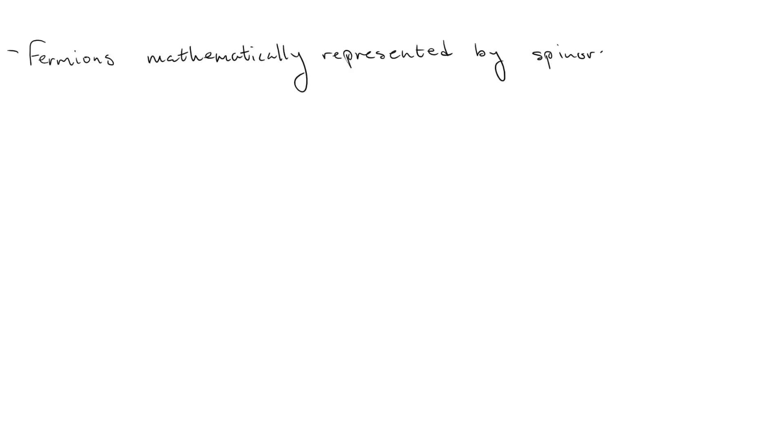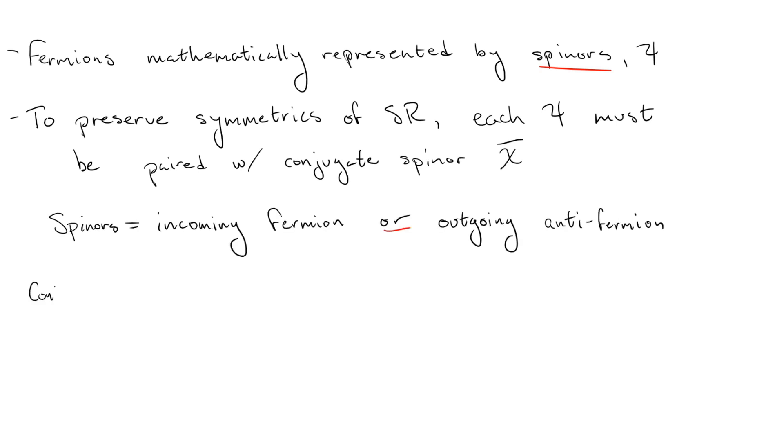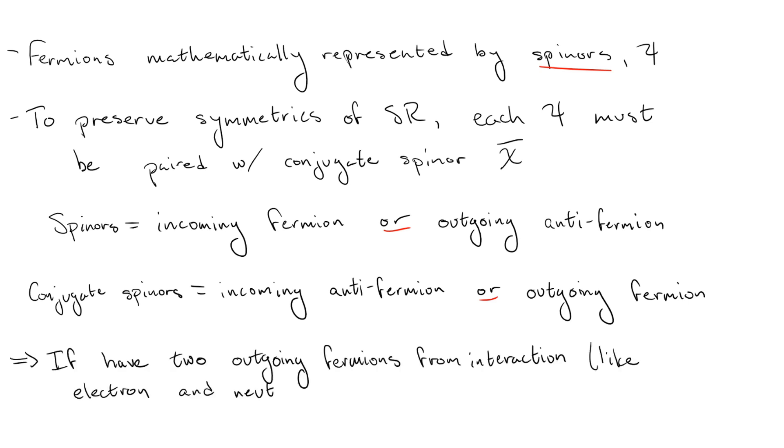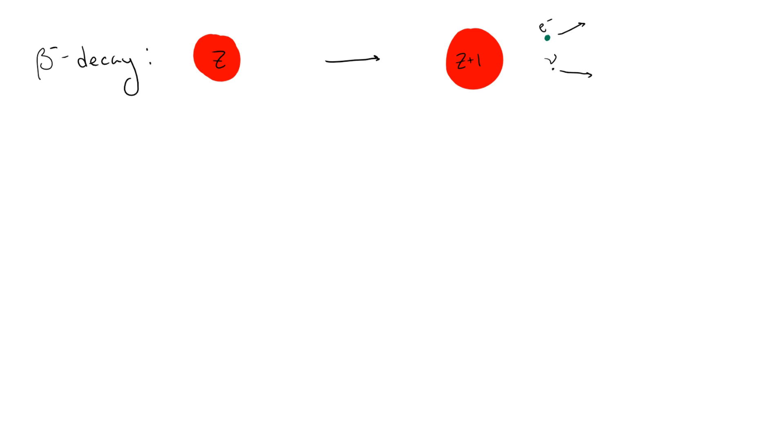In my first standard model video where I talked about symmetry and quantum electrodynamics, I mentioned that fermions are mathematically represented by objects known as spinors, and in order to preserve the symmetries of special relativity, spinors must always be paired up with conjugate spinors. Without getting too deep into the gory details, it turns out that the spinors can be interpreted as either incoming fermions or as outgoing antifermions. Similarly, the conjugate spinors can be interpreted as incoming antifermions or outgoing fermions. All of this is to say that if we have two spinors in the final state of our system, like in beta decay with the electron and the neutrino, one must be a regular particle and the other must be an antiparticle. So if we know that during a beta decay an electron is emitted, then we know that the other particle emitted must be an antineutrino. If instead we had a beta plus decay where a positron or antielectron is emitted, we know that a standard neutrino is also emitted.